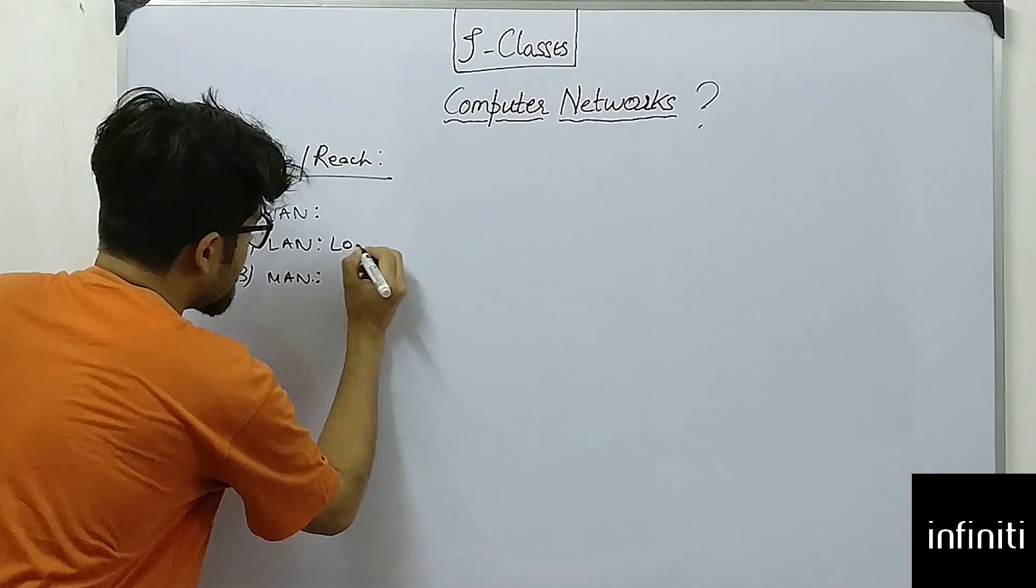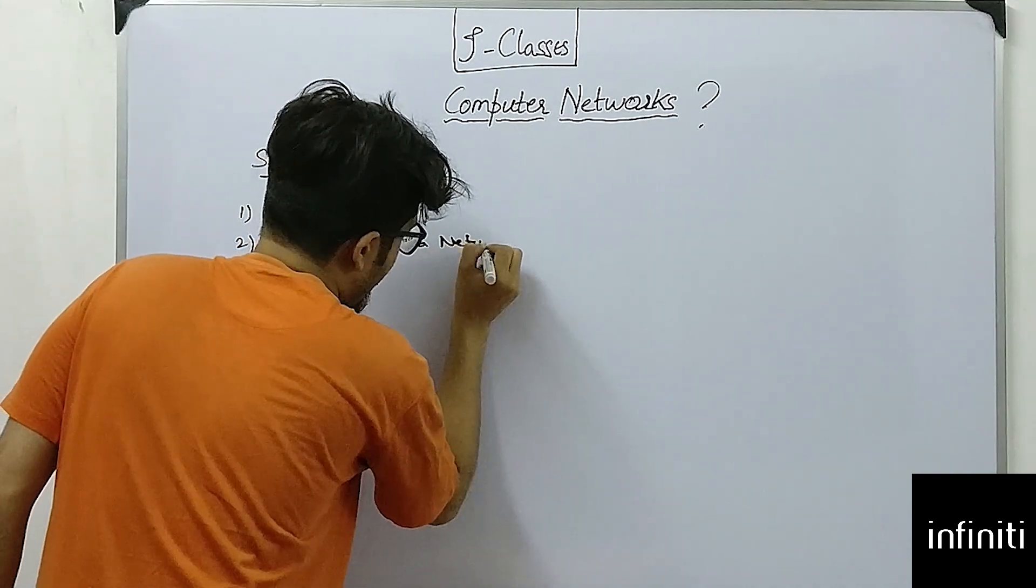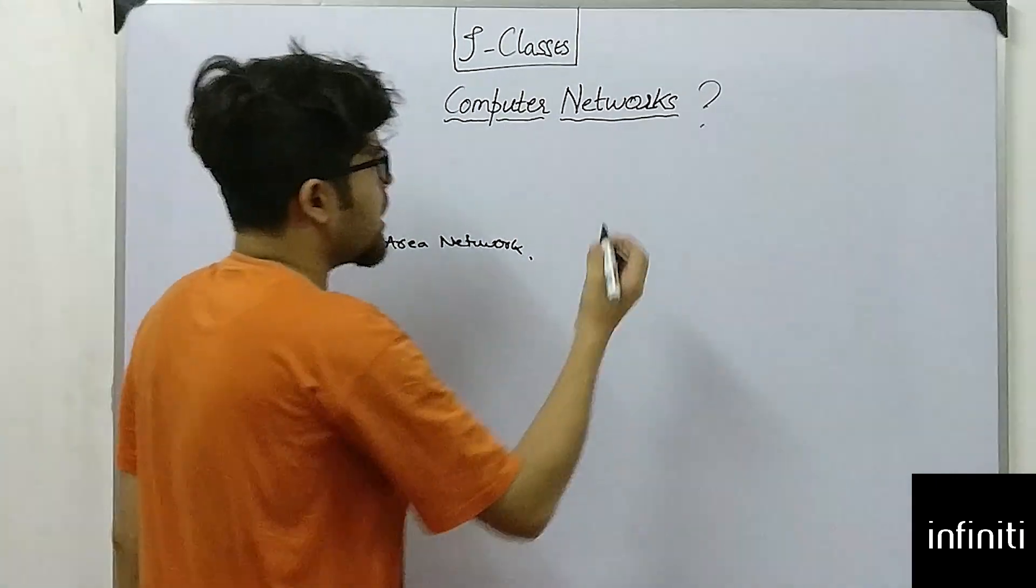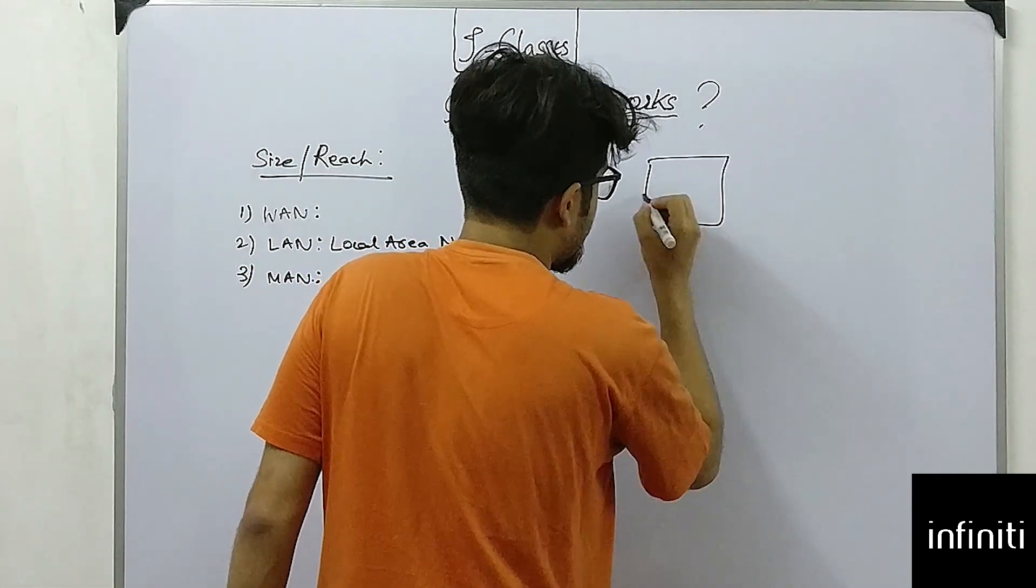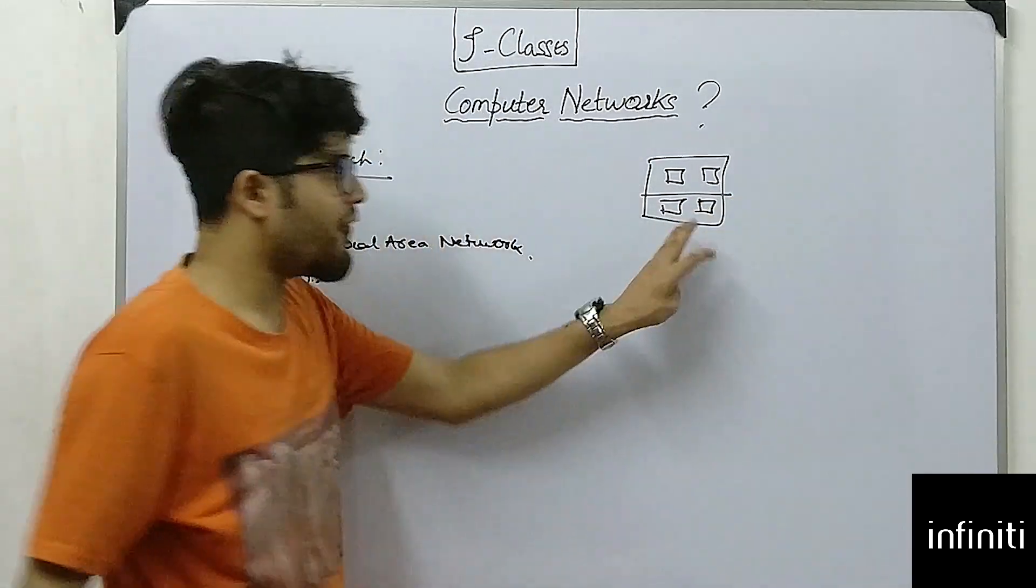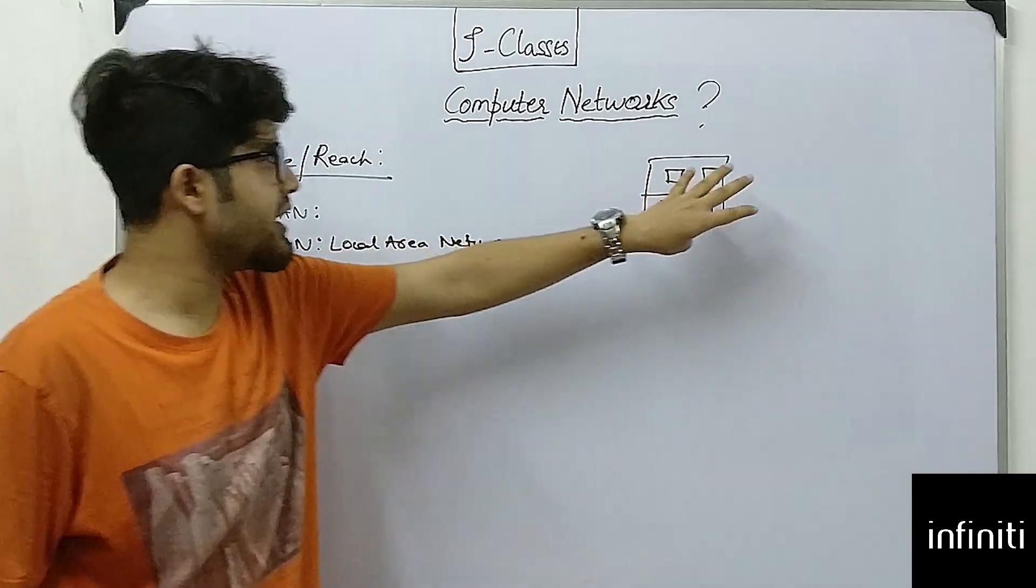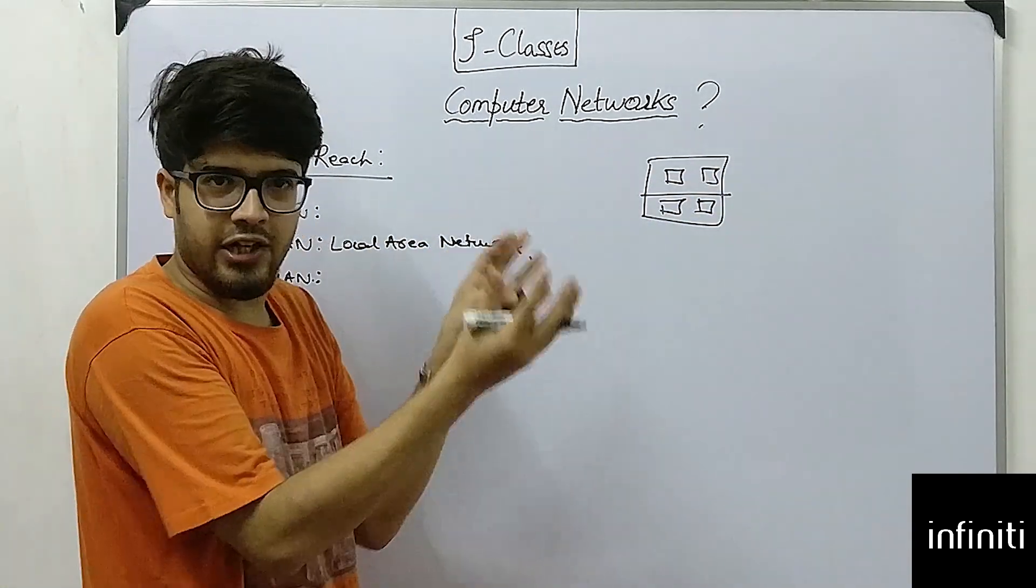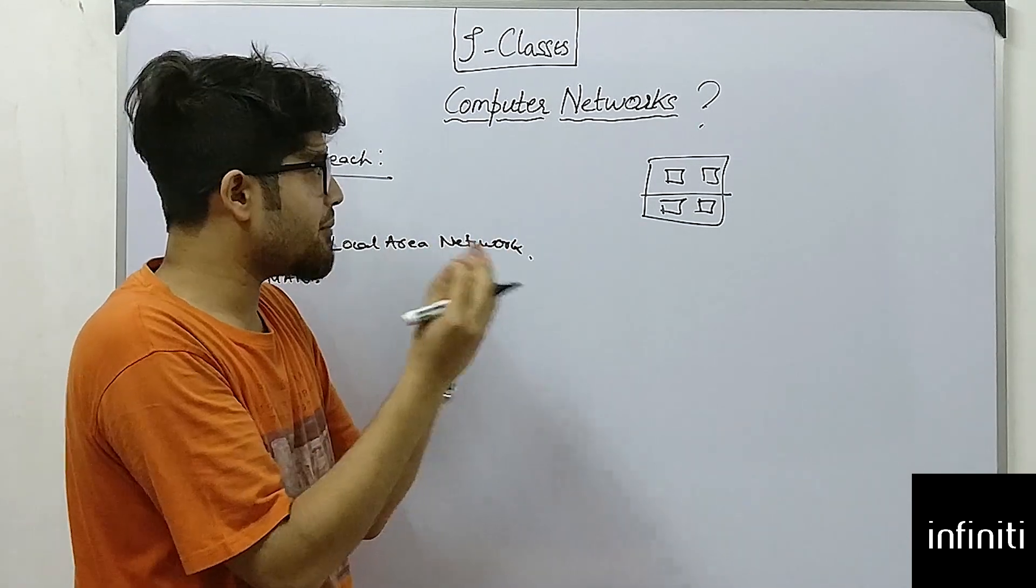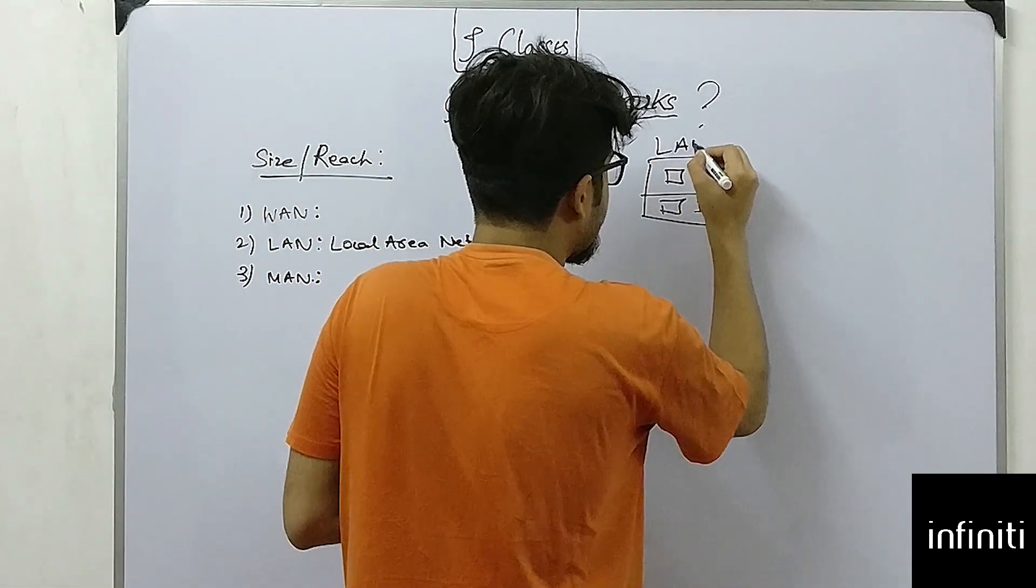First, we are going to study about local area network. Local area network is a network in a building or a premise like this. This is an office—this may be a small business, this may be a building—and these are the different devices that are connected in a network and that need to transmit data within each other. For that type of network, we establish what we call as LAN—local area network.